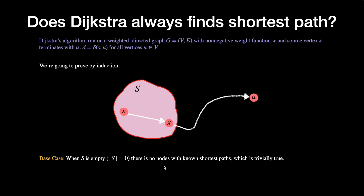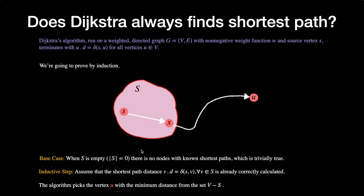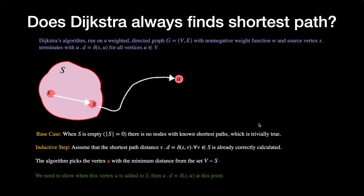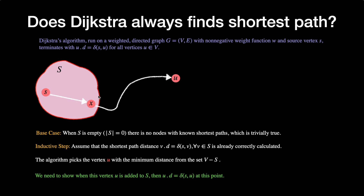For the inductive step, assume that the shortest path distance v.d = δ(s, v) for all v ∈ S — all vertices in S already have their correct shortest paths stored. The algorithm then picks vertex u via the min-heap, extracting the minimum u.d value. We want to show that when we add u to set S, u.d equals the shortest path δ(s, u).